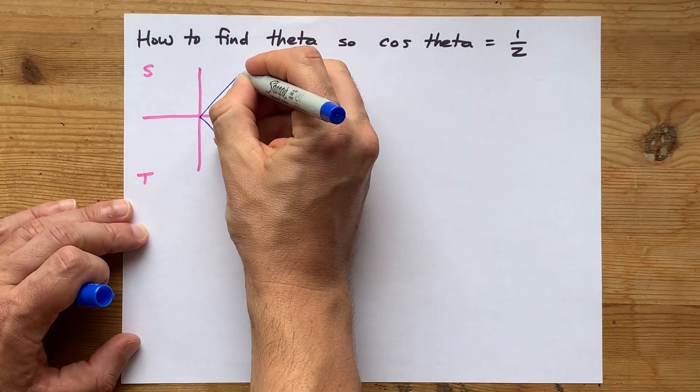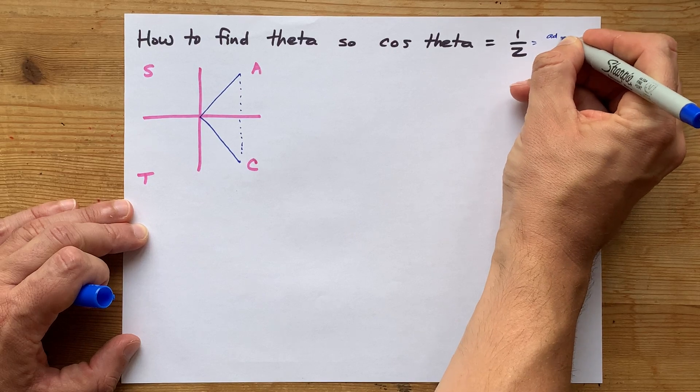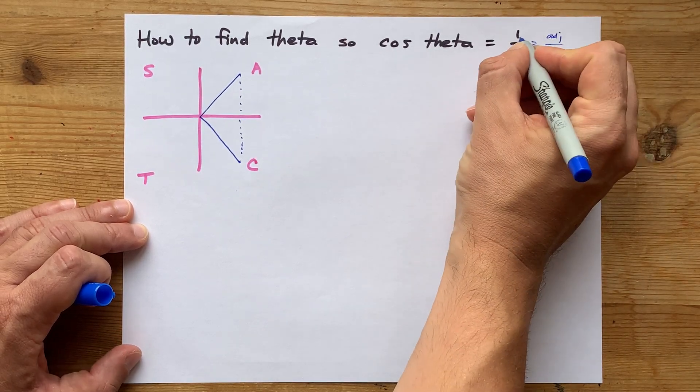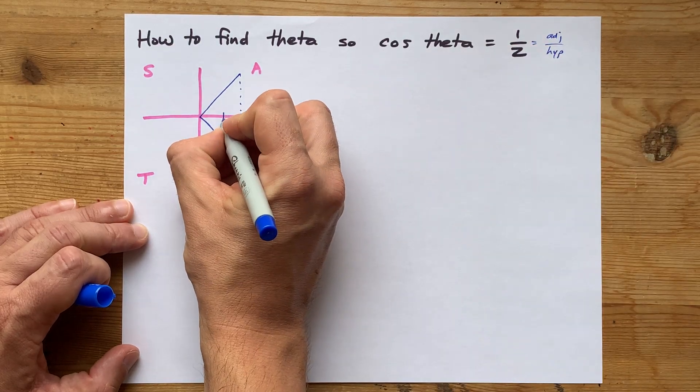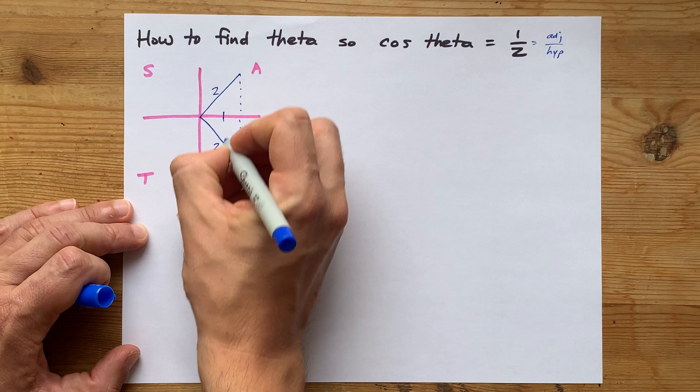Where I'm going with that is that because cosine is adjacent over hypotenuse, then your adjacent side has a length of one, and your hypotenuse has a length of two.